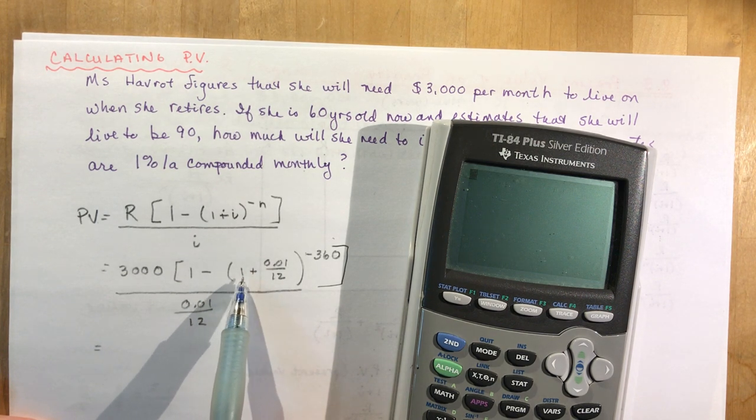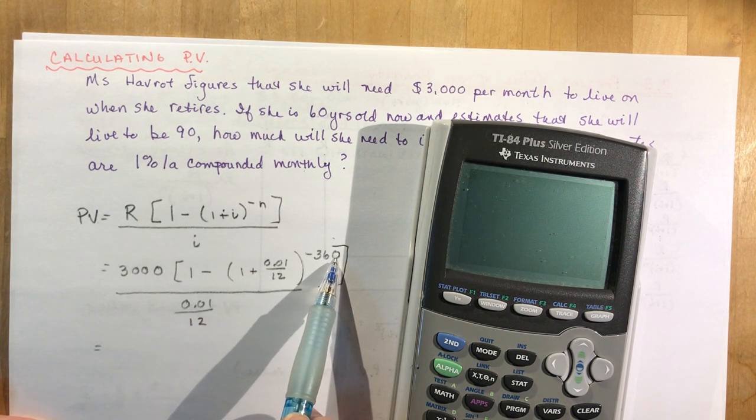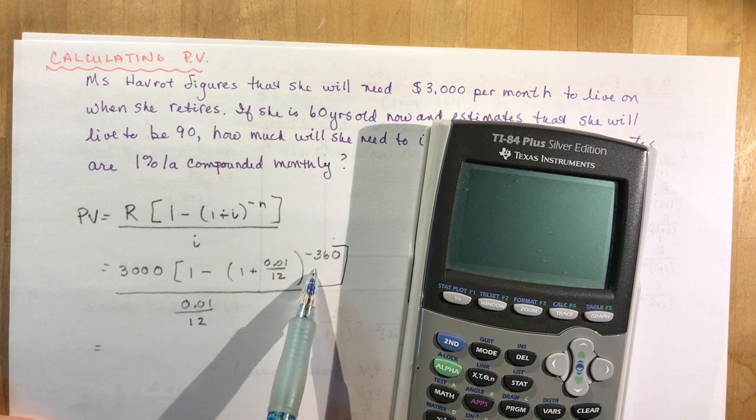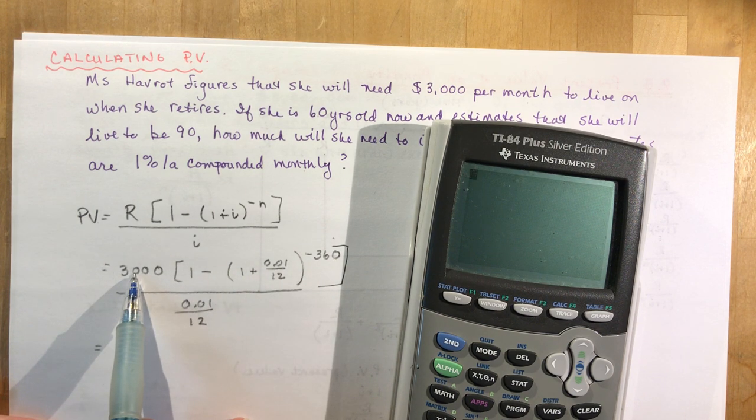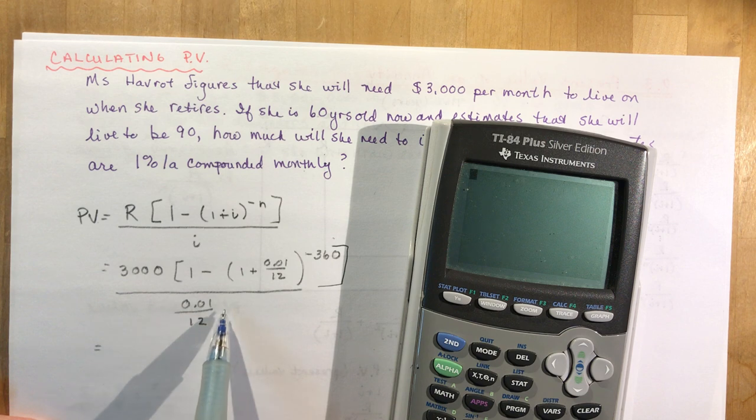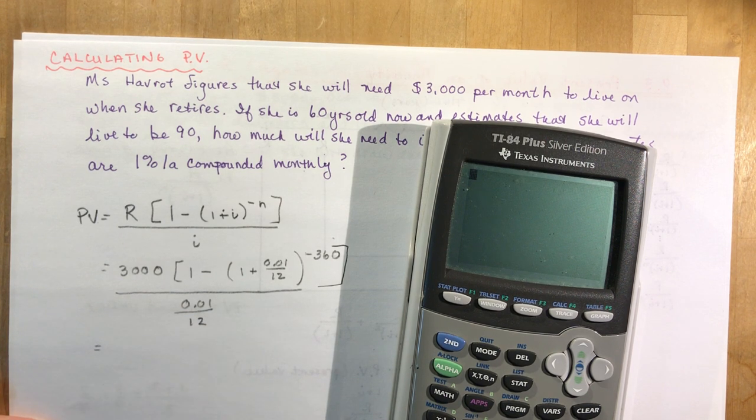I would probably do this, this to the minus 360, 1 minus my answer times 3,000 and divided by this in brackets. So let's do that and see what we get.